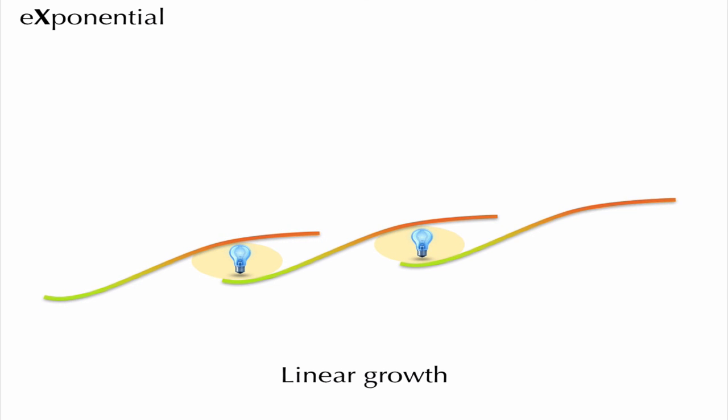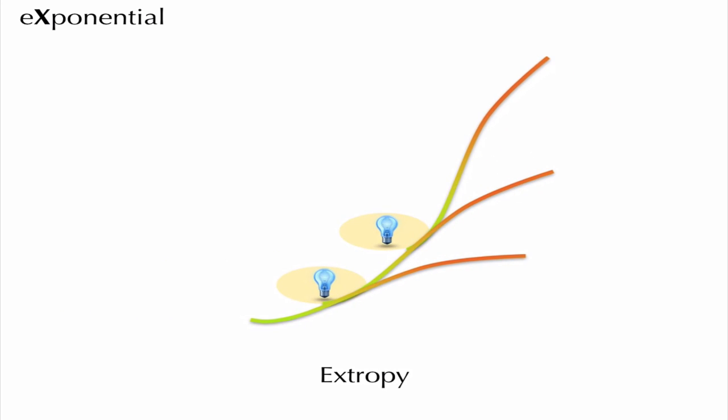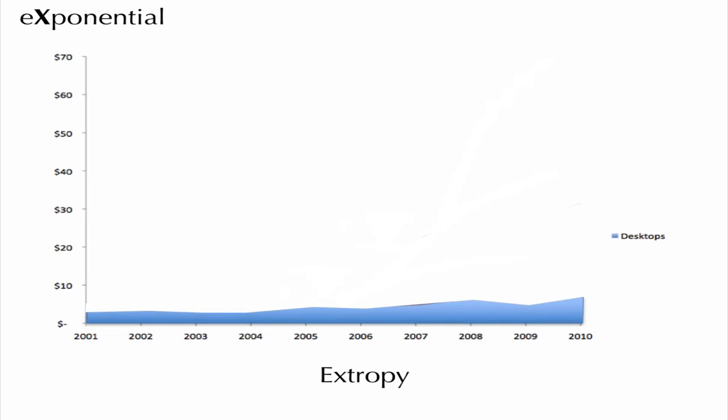Even if you plan it in, if you were to string your sigmoid curves together one after another, you're only going to achieve linear growth. Apple had a different idea: stack the curves, one on top of another, and you're going to get exponential growth in a mature organisation. This strategy, which we're calling extropy, is the only way we're going to do it.